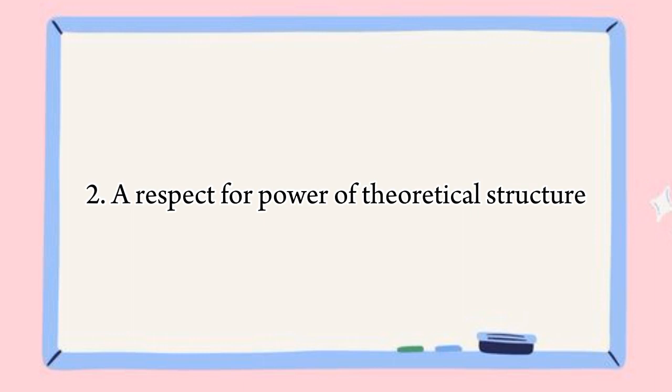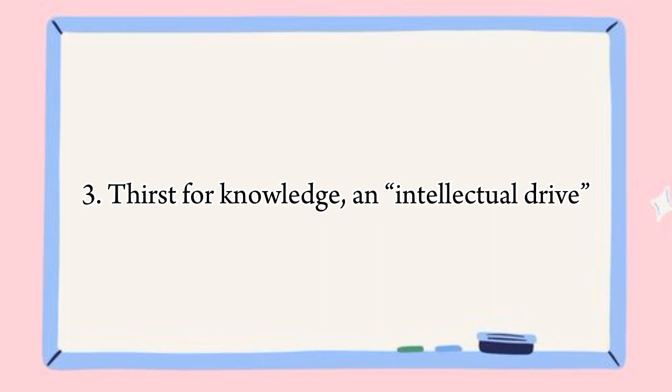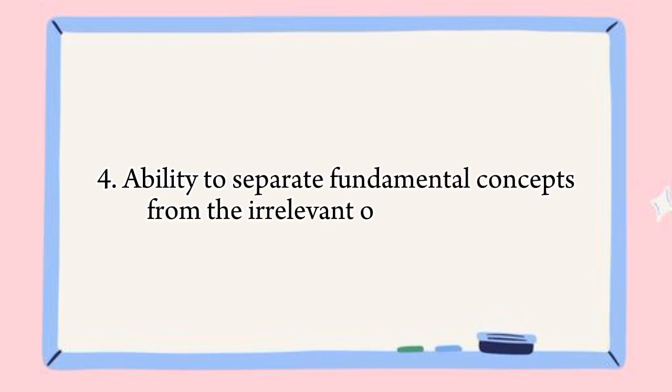Second, respect for the power of theoretical structures — scientists understand the importance of theories and models in explaining the natural world. For example, a physicist might use the theory of relativity to make predictions about the behavior of particles moving at high speeds. Third, thirst for knowledge — scientists have a strong desire to learn and discover new things. For example, a biologist studying a particular species might be driven by a desire to learn more about its behavior and ecology. Fourth, ability to separate important concepts from irrelevant ones — scientists are able to focus on what is important and ignore what is not relevant. For example, a chemist studying a chemical reaction might focus on the reactants and products while ignoring other factors that do not affect the reaction.